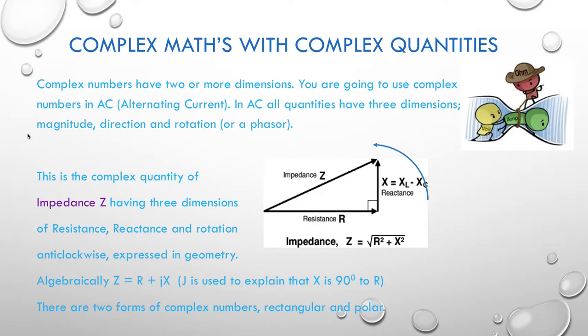And I've expressed it in geometry here in the middle of the page. And you can see the blue arrow rotating anti-clockwise. That's the rotation part of it. And I've got the components of resistance and reactance make up the impedance. Now algebraically I can represent that complex number. It's Z equals R plus JX. J is used to explain that X is 90 degrees to R. So there are two forms of complex numbers. They're called rectangular and polar. And the diagram I've got on the screen is a rectangular representation. Because I'm using a triangle to represent the sides of a rectangle. And the diagonal across the rectangle makes a triangle. So it's called rectangular.